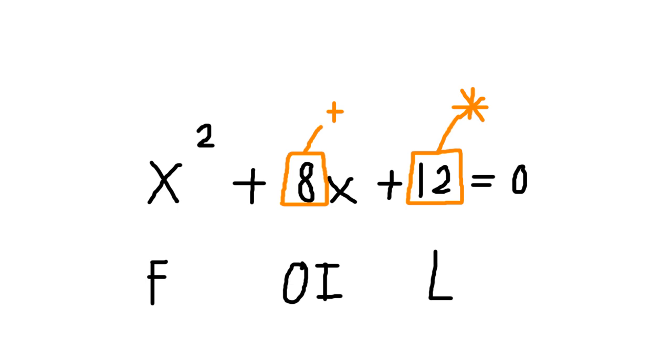Which two numbers that add to 8 multiply to be 12? This works this way because the term with x is 8 and the constant term is 12. The outside and inside terms make up the term with x, and the last terms make up the constant term.